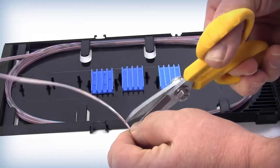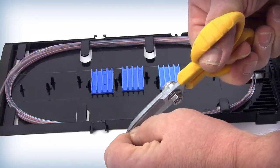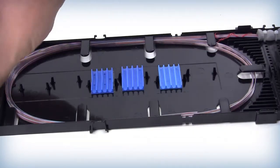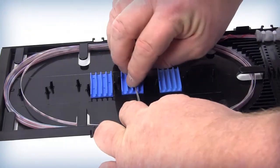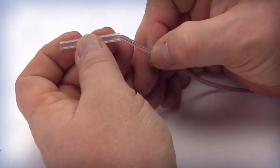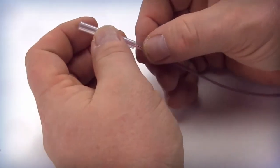Measure and cut the first fiber to be spliced to the appropriate length. With spiderweb ribbon, it is possible to store at least one service loop in the tray. Slide splice protection sleeves onto the fiber groups to be spliced.